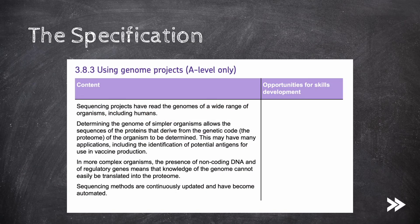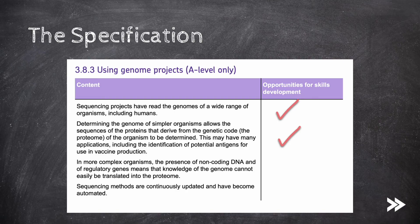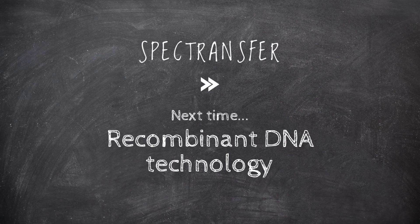That covers this part of the specification. We've covered how sequencing projects have read the genomes of a wide range of organisms, including humans, and how determining the genome of simpler organisms can be used to determine their proteome — useful for example in identifying potential antigens for vaccine production. We've also covered how, in more complex organisms, non-coding DNA and regulatory genes mean the genome cannot easily be translated into the proteome, and that sequencing methods are continuously updated and automated. That's it for now — thanks for watching, please subscribe and comment. Next time we will be covering recombinant DNA technology.